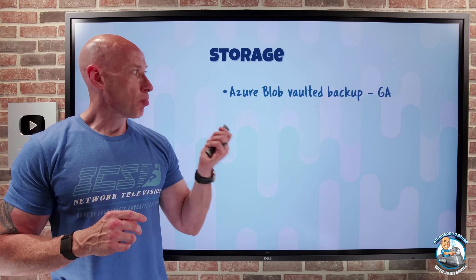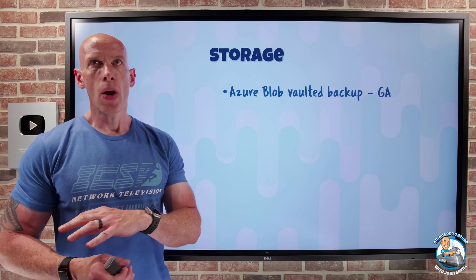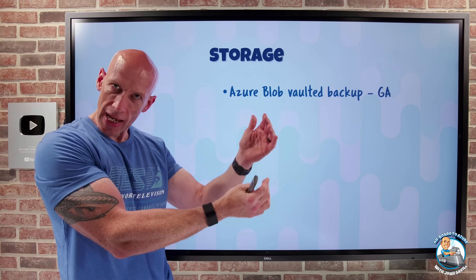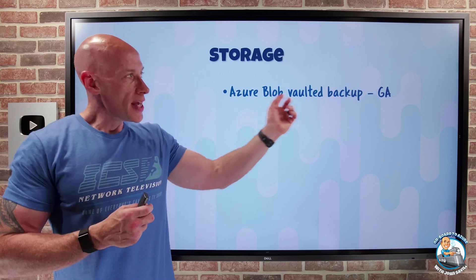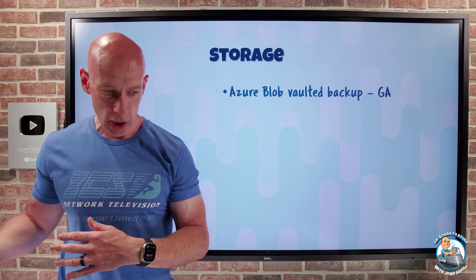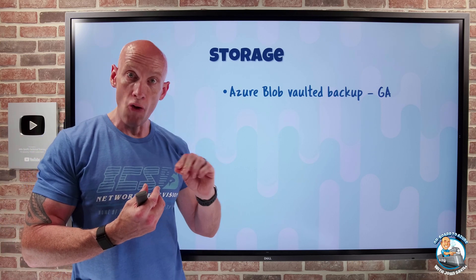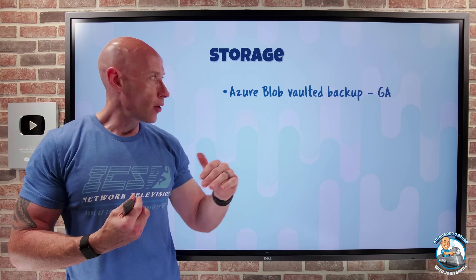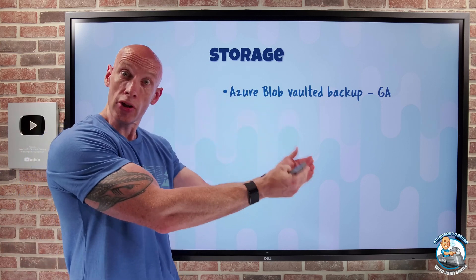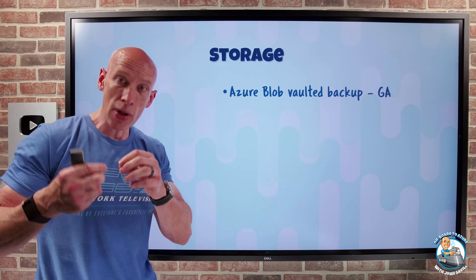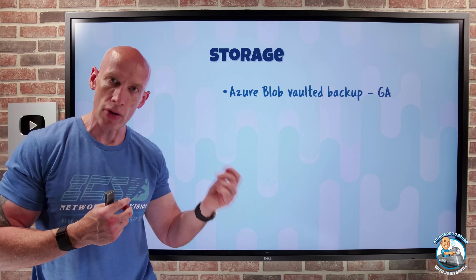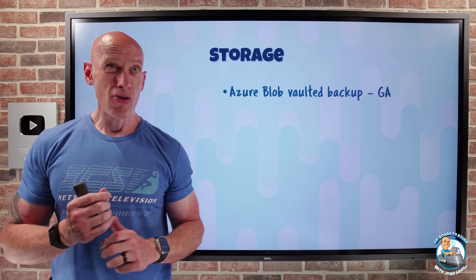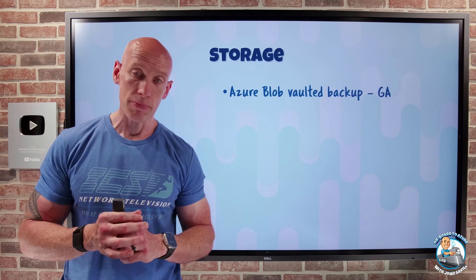On the storage side, Azure Blob Vaulted Backup has gone GA. Historically, Azure Backup was just an orchestrator taking snapshots as recovery points on the source storage account, giving a certain level of protection but maybe not enough. Now it takes those backups and puts them in another storage account using the object replication feature of Blob — asynchronously replicating to a secondary account. Recovery points replicate there, and only once replicated is the recovery point marked as created, giving separation between primary and vaulted backup, useful for long-term retention and regulatory requirements.